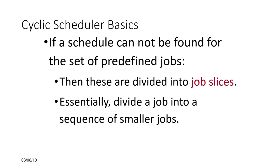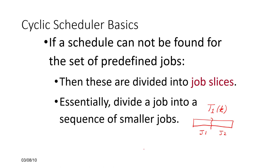If a schedule cannot be found for a predefined set of jobs, we can divide jobs into job slices. For example, one instance of task t1_k can be split into slice 1 and slice 2. We can run job slice 1, then run other more important tasks with closer deadlines, and then run the second job slice. This is sometimes required if other tasks have tight deadline constraints. Importantly, the job must be splittable; if not, this trick is not applicable.